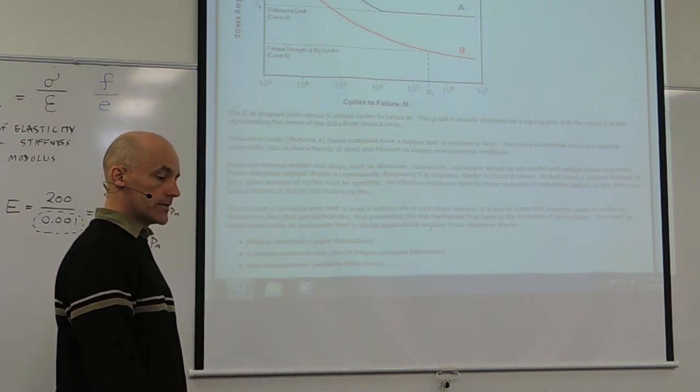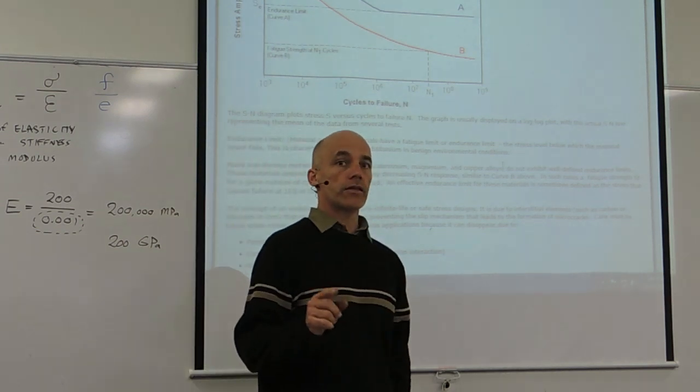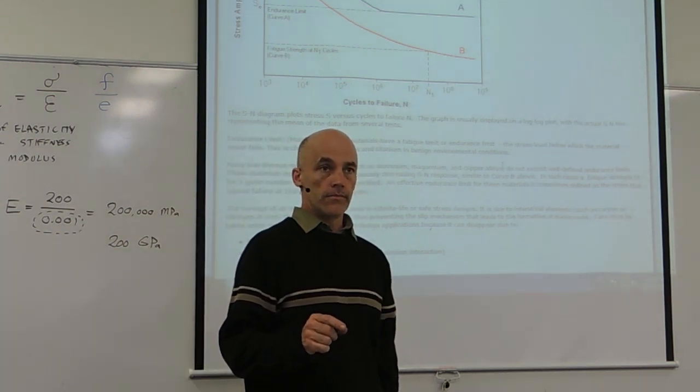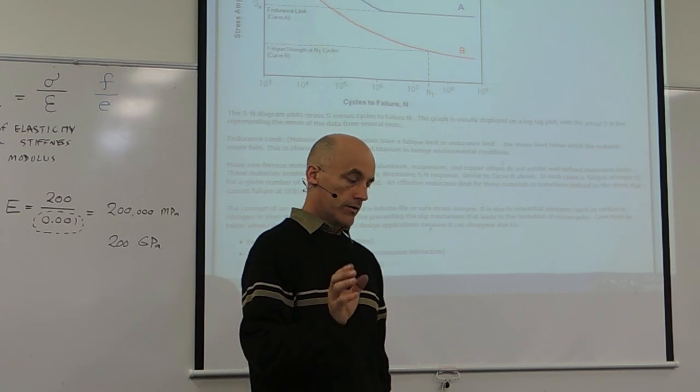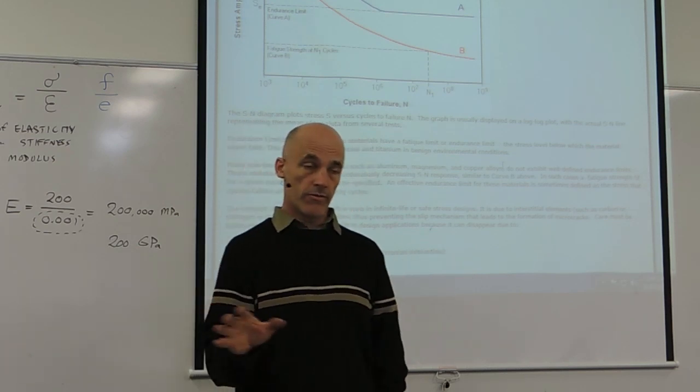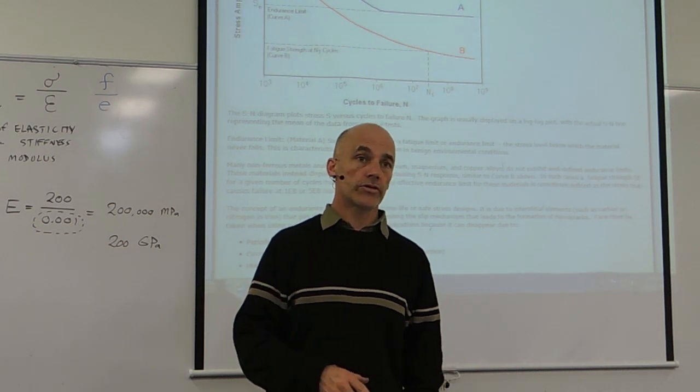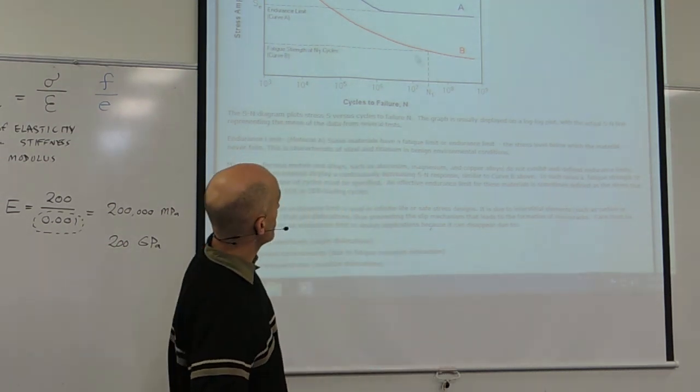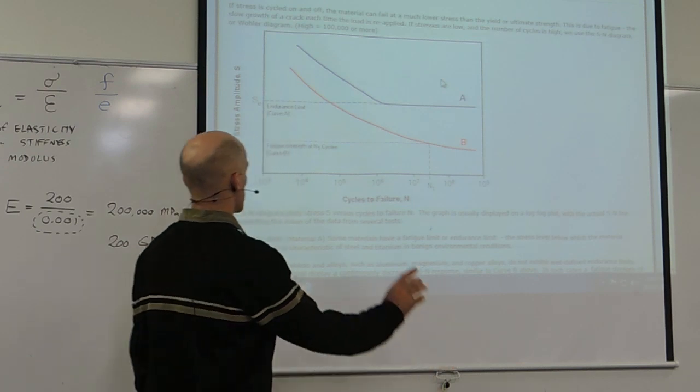The second thing is that you can break something at less than the yield point. So you might think, oh, it's okay, this steel can handle 500 megapascals yield point, so it should be right to operate this at 400, it should never break, not necessarily. It might be something like this.